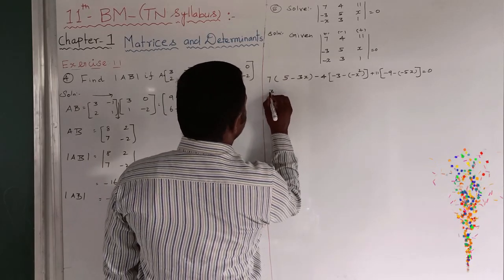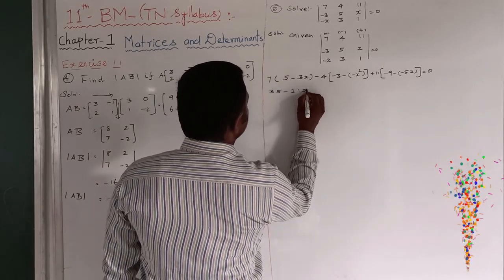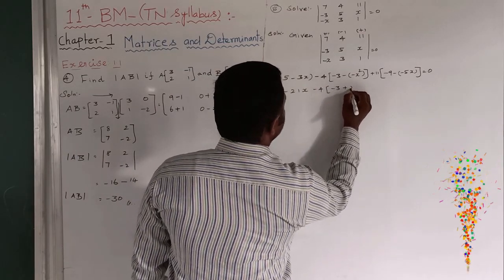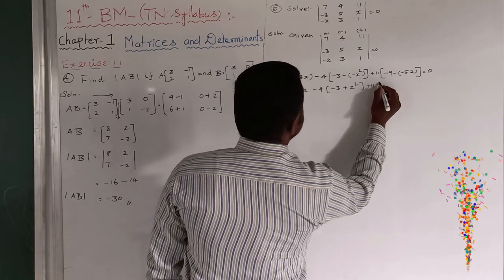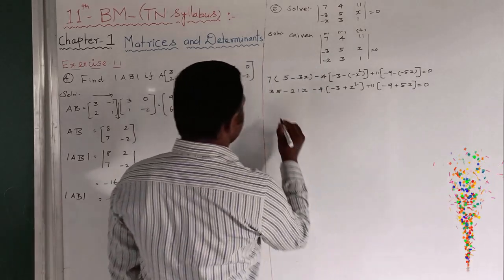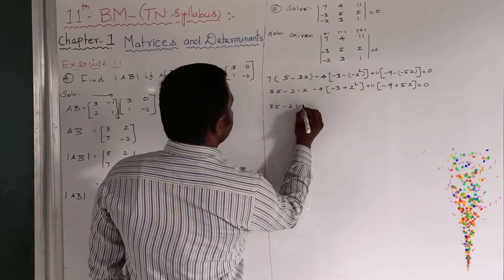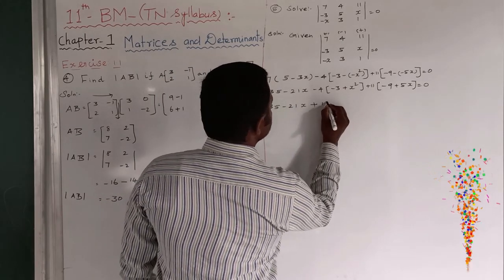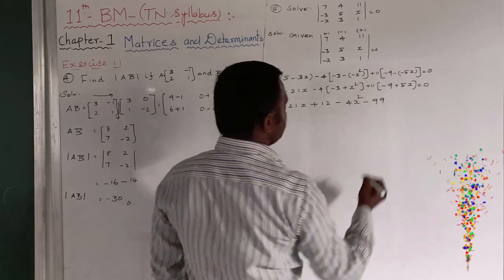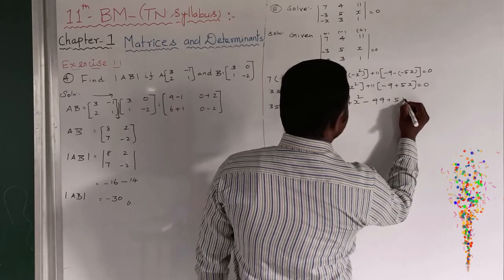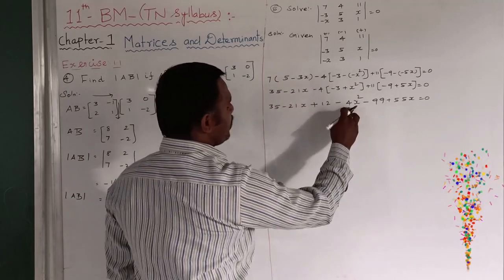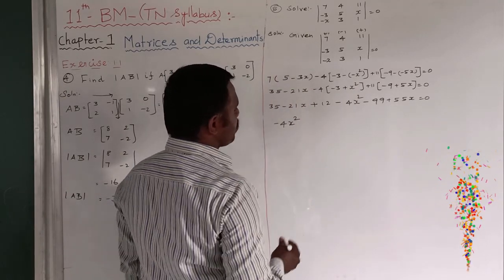So, I want to product these two terms. 7, 5 is 35. Minus 21X. Minus 4 into minus 3 plus X squared. Plus 11 into minus 9. Plus 5X. This is equal to 0. So, 35 minus 21X. Plus 12. Minus 4X squared. Minus 99. Plus 55X. This is equal to 0.